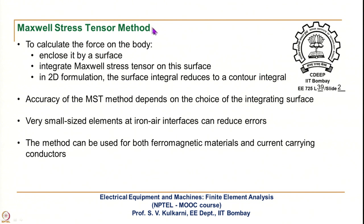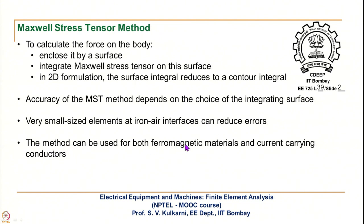Now let us go into details of the Maxwell stress tensor method. To calculate the force on a body, we enclose it with a hypothetical surface and integrate the Maxwell stress tensor over this surface. In 2D formulation, the surface integral reduces to a contour integral. Accuracy of the MST method depends on the choice of the integrating surface; at iron-air interfaces, very small elements are needed to reduce errors. This method can be used for both ferromagnetic materials and current-carrying conductors.